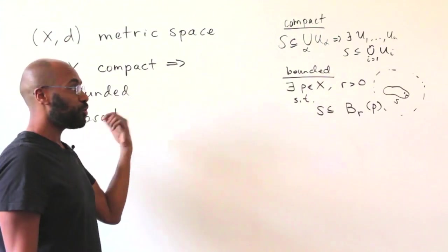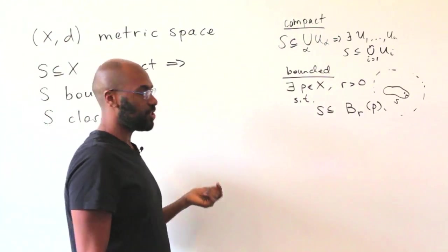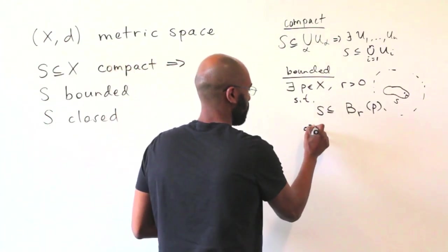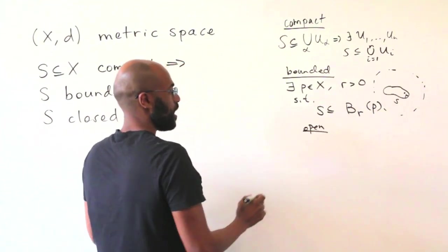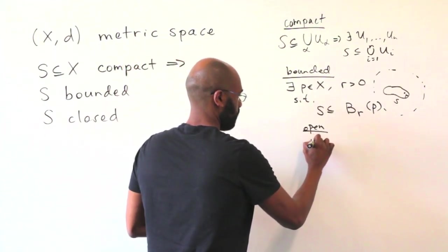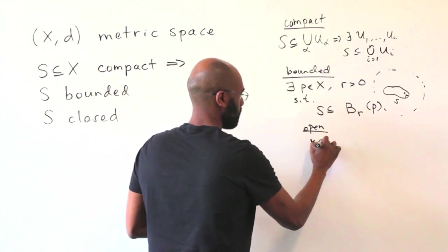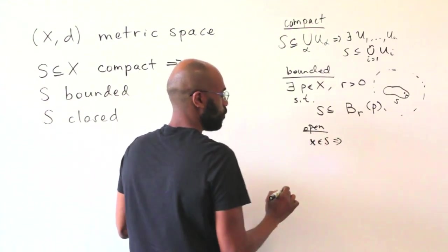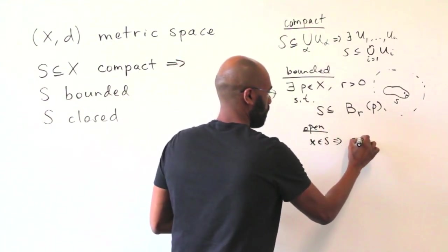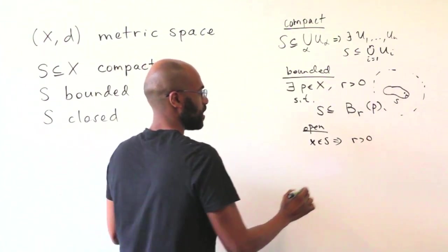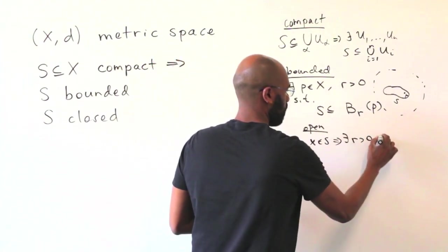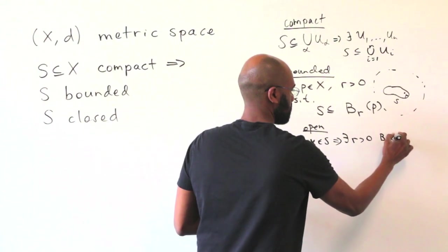And finally the definition of closed which we're going to think about as actually as the complement of open. So open is the one really that we're going to functionally use and a set is open if for any point inside the set you can find a positive radius so that the ball of that radius centered at this point that you chose sits inside of the set.